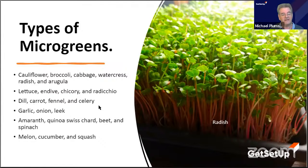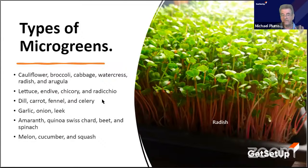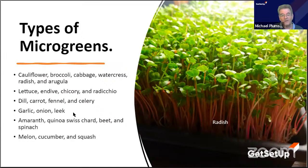The third one — dill, carrot, fennel, and celery — I call the carrot family. And that sort of focuses me on a lot of the things I've mentioned. Garlic, onion, leek — you can call them what you like.